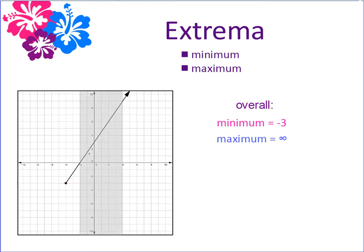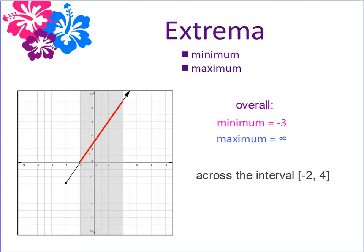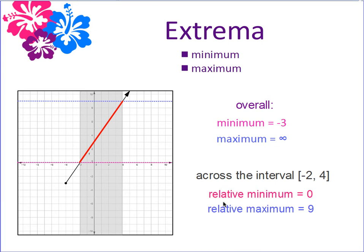Now, what if I wanted to only look at a small section of my graph? We're going to gray out the section from where x is negative 2 to where x is 4, and I'm only looking at the section now in red. That's going to change my minimum and maximum values for that section of graph. But since I already have something called a minimum and a maximum, I can't use those same phrases again. So while my new minimum is at 0 and my new maximum is at 9, I need something different — we introduce the term relative minimum and relative maximum. That refers to just a small section of graph and its low y-value and its high y-value.